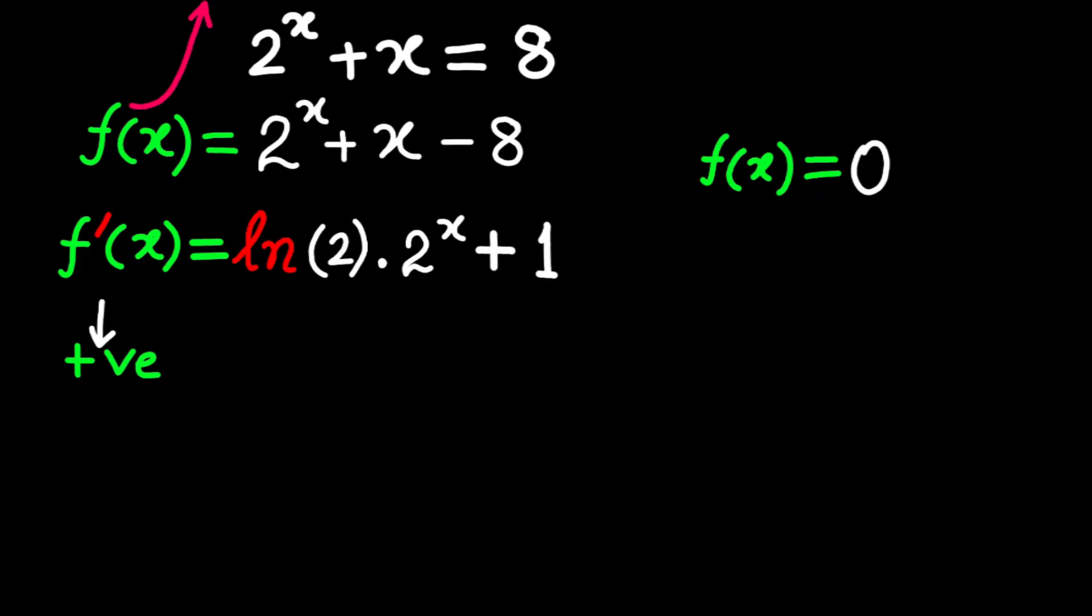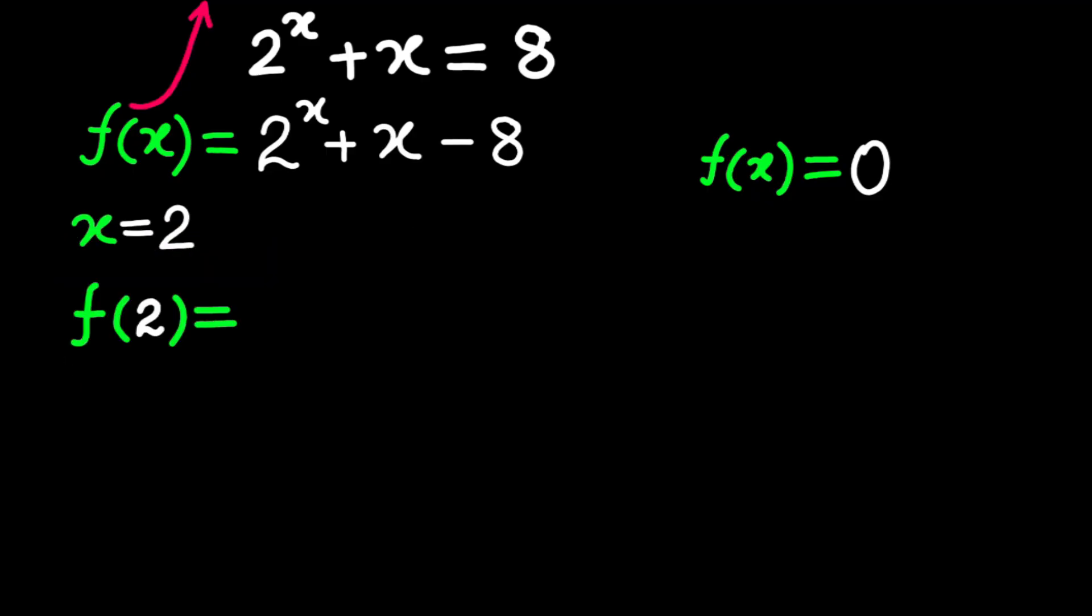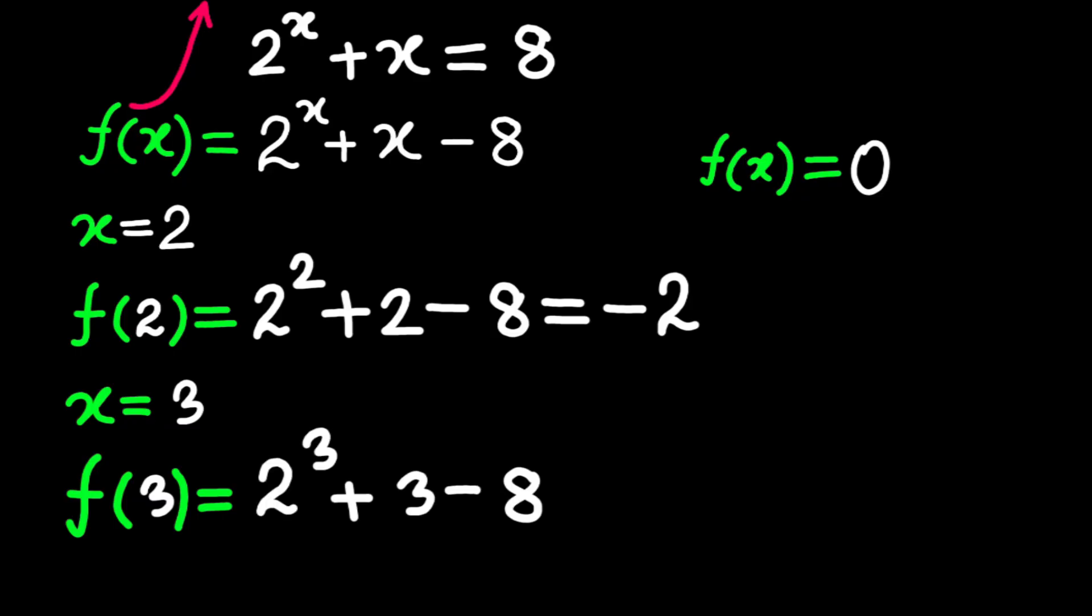Here's what happens next. Does it cross at all? Let's check some values to see if f of x goes from negative to positive, which would mean there's a root somewhere by the intermediate value theorem. Let's try x equals 2. So f of 2 equals 2 to the power 2 plus 2 minus 8, which is 4 plus 2 minus 8, equals negative 2. That's negative, so we're below the x-axis. Now try x equals 3. f of 3 equals 2 to the power 3 plus 3 minus 8, which is 8 plus 3 minus 8 equals 3. That's positive, so we're above the x-axis.